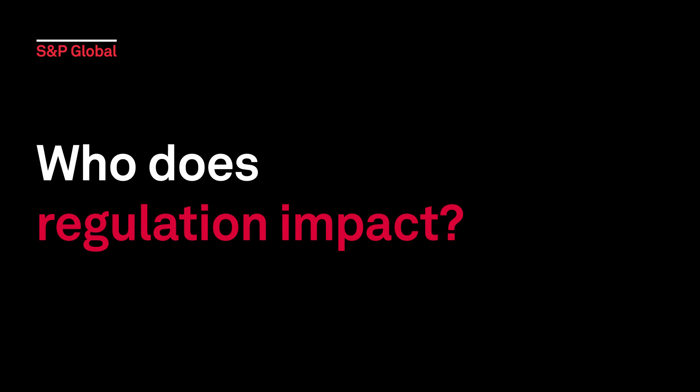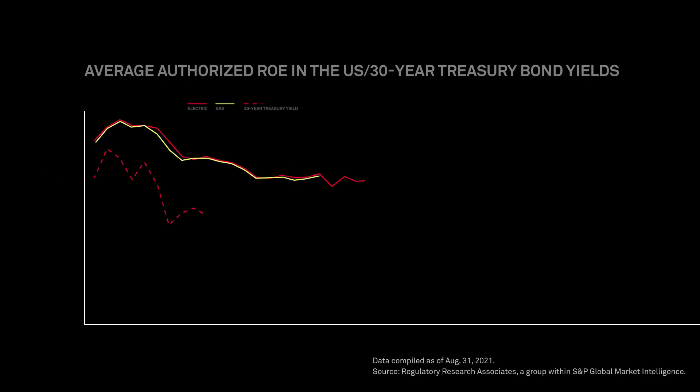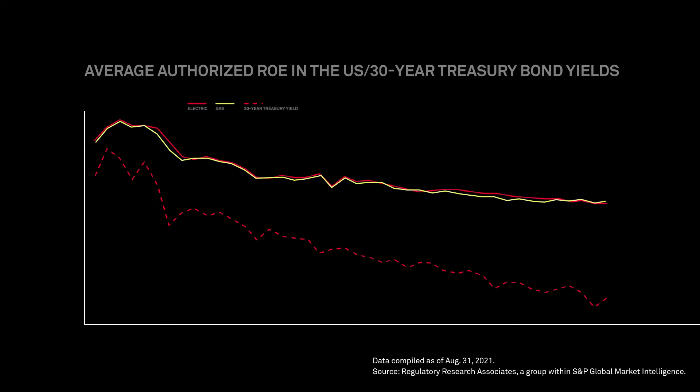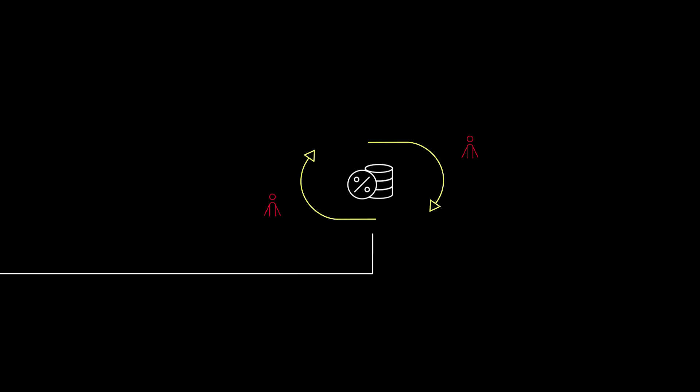Who does regulation impact? Regulators must allow a reasonable return on equity, or ROE, for investors while maintaining service quality, safety and reliability, and meeting public policy goals. A key component of a rate case is setting an appropriate ROE that balances rate payer and investor interests — it's often the most contentious part of a rate case, too.